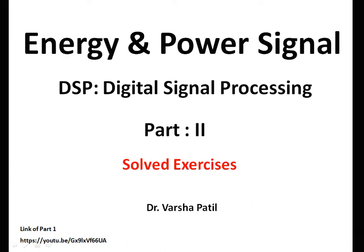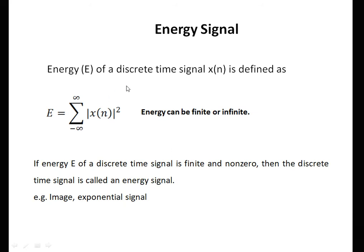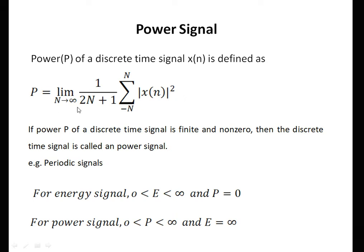On the fast track, we see the definition of energy and power for discrete time signals. In the first video, I have explained in detail, so we will just see the formulas for energy and power. This is the formula for energy of the signal. Energy can be finite or infinite. When the signal is aperiodic in nature or periodic with finite length, then energy exists for that particular signal.